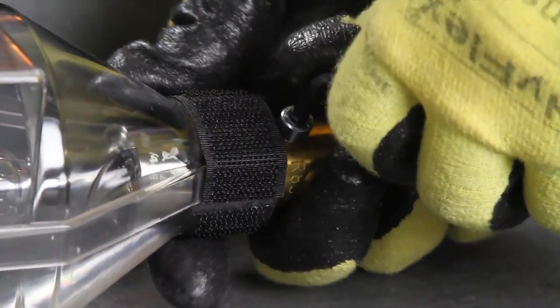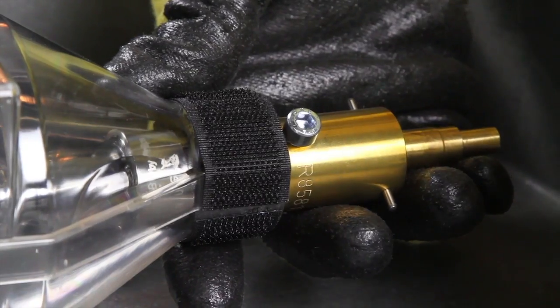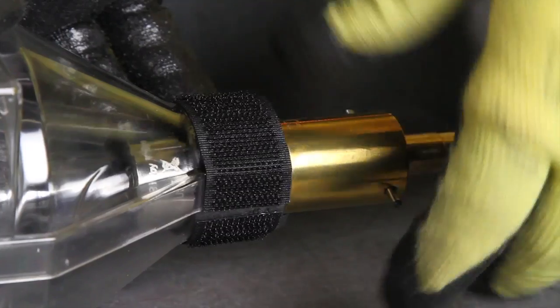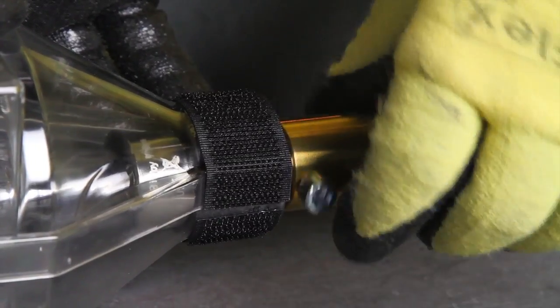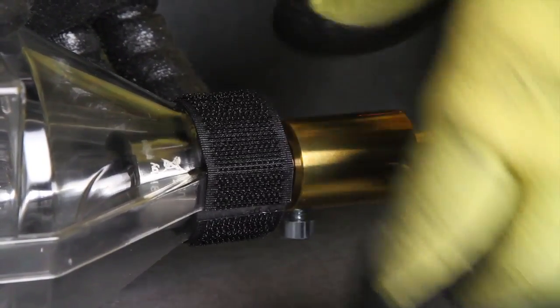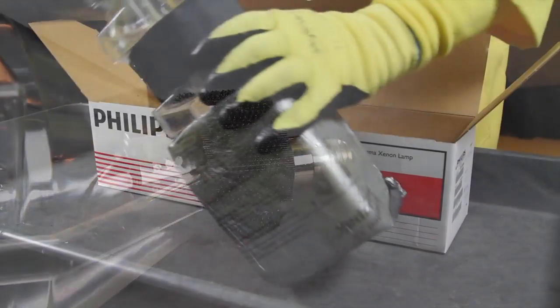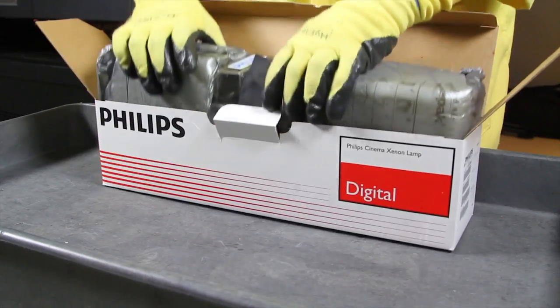Next, loosen the lock nut on the cathode adapter using the 5mm wrench. Unthread the adapter and set aside for use on the replacement lamp. Replace the old lamp in its original packaging.